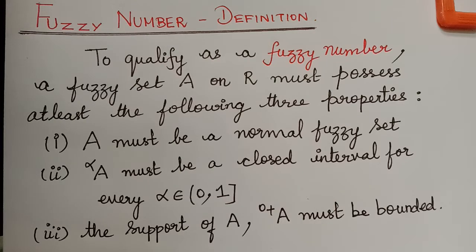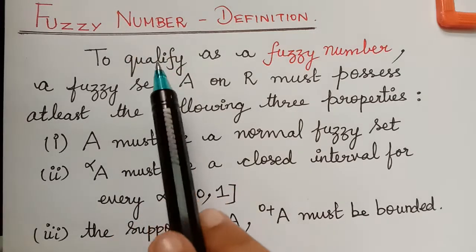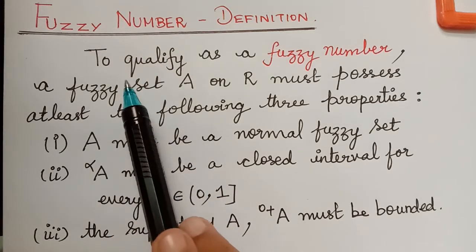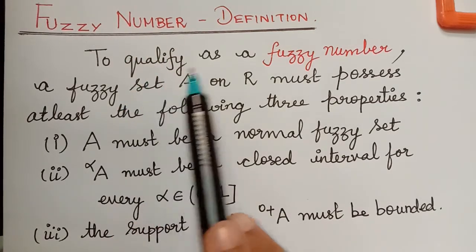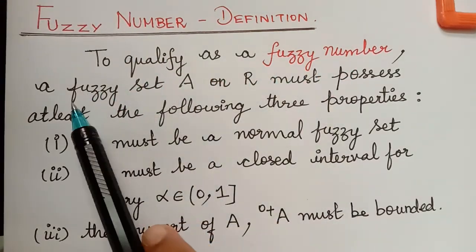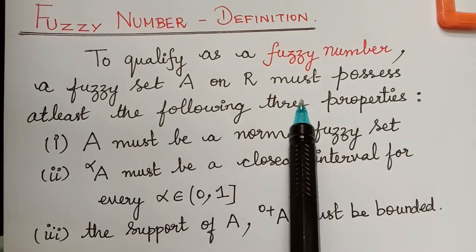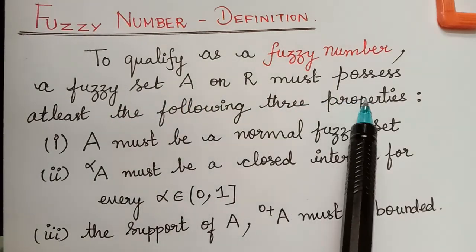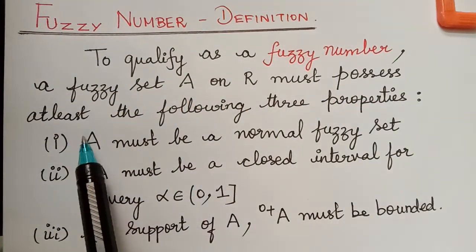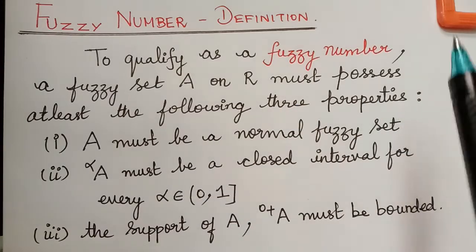Hello students, we shall now learn about a fuzzy number. To qualify as a fuzzy number, a fuzzy set A on R must possess at least the following three properties.